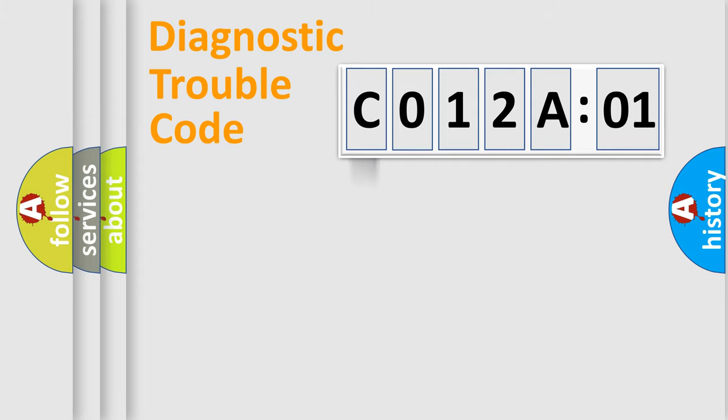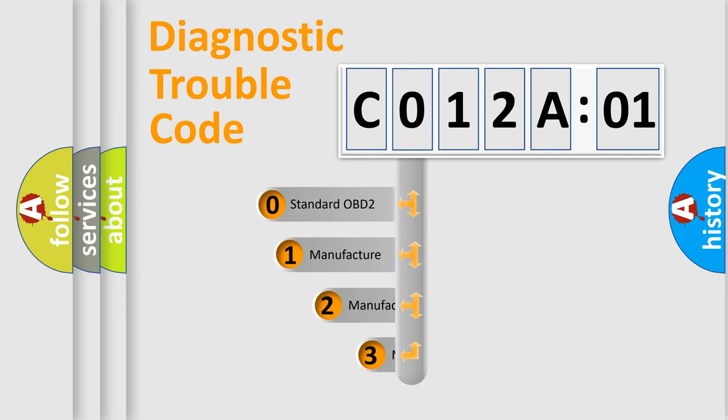Powertrain, Body, Chassis, Network. This distribution is defined in the first character code.